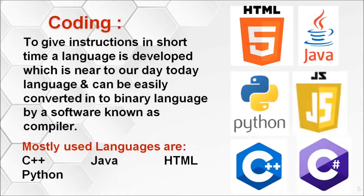That is why some languages have been developed which work as a medium to give instructions to the computer — languages well familiar to humans and very near to day-to-day language. The instructions given in these languages can be further converted into binary language by another software known as a compiler. Nowadays, we are mostly using C++, Java, HTML, and Python.